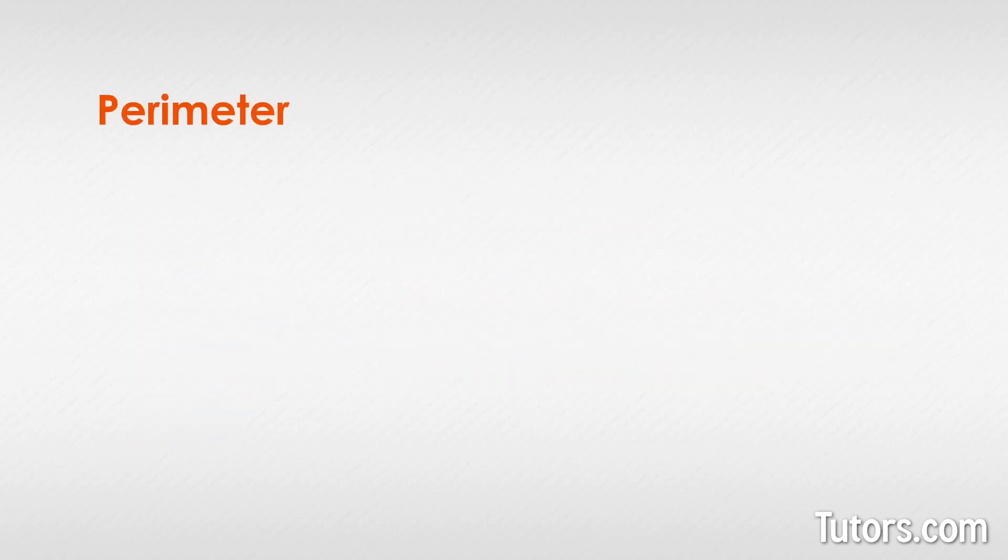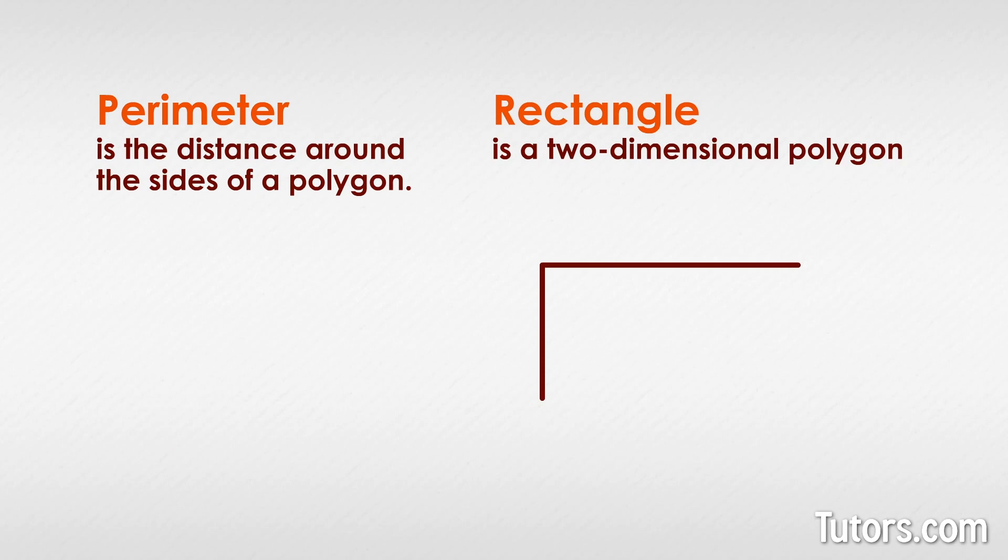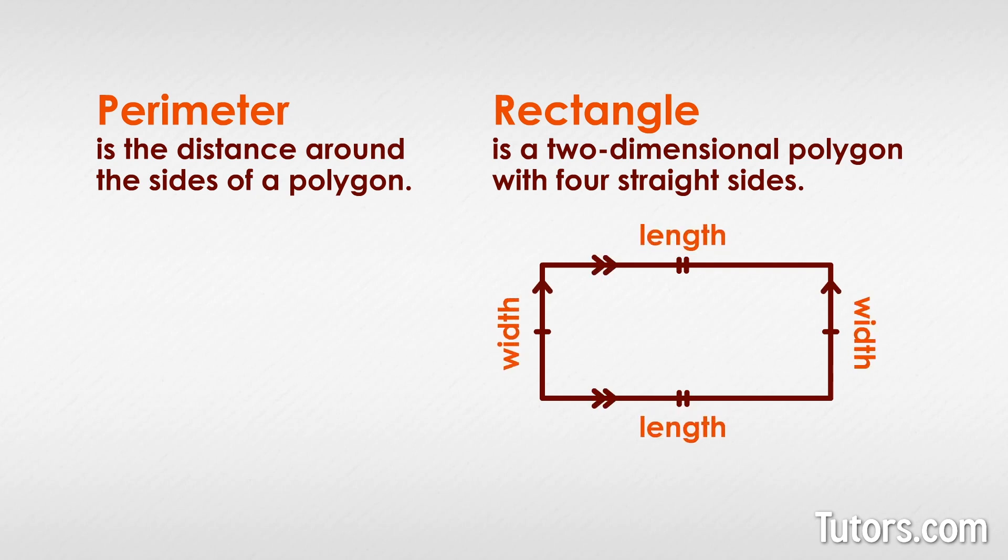Let's start with perimeter. Perimeter is the distance around the sides of a polygon. A rectangle is a two-dimensional polygon with four straight sides. It has opposite sides congruent and parallel. That means it will have two lengths and two widths.